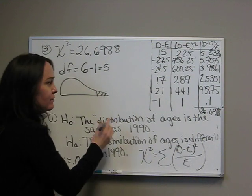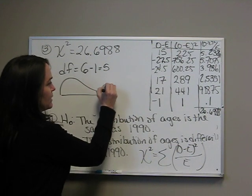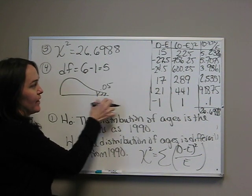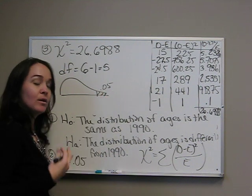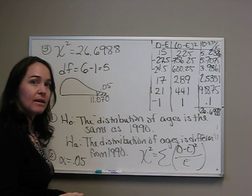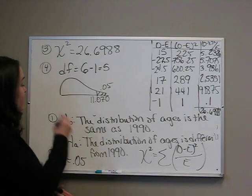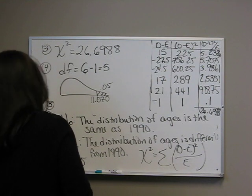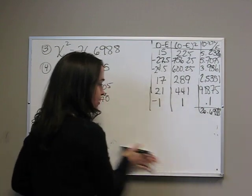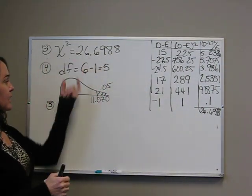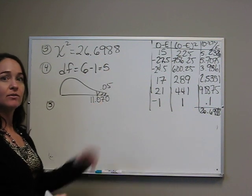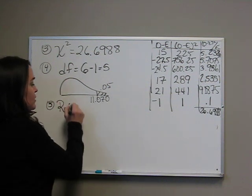Critical value looks at our alpha. Alpha was 0.05. We want to know, degrees of freedom of five, what is the chi-squared value that has 0.05 in the tail? We go to our table, and you should see that that is 11.070. Step five is our chi-squared value that we just found in step three in the non-rejection or the rejection region. Well, 26 is larger than 11. So it's definitely in the rejection region. So we reject.